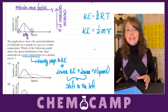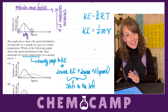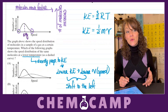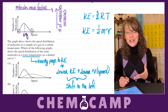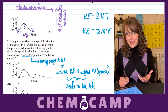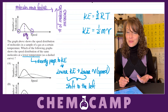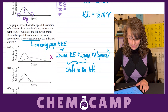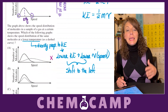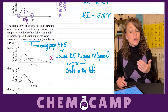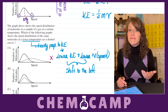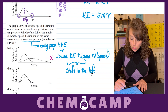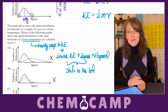In letter A, we see a distinct shift to the right. A shift to the right is actually an indicator of those molecules moving faster, which corresponds to a higher kinetic energy, which would indicate a higher temperature — not what we're looking for. In letter B, the height of the curve just decreases, which corresponds to a fewer number of molecules. However, there's no shift left or right, so that's not what we're looking for either.